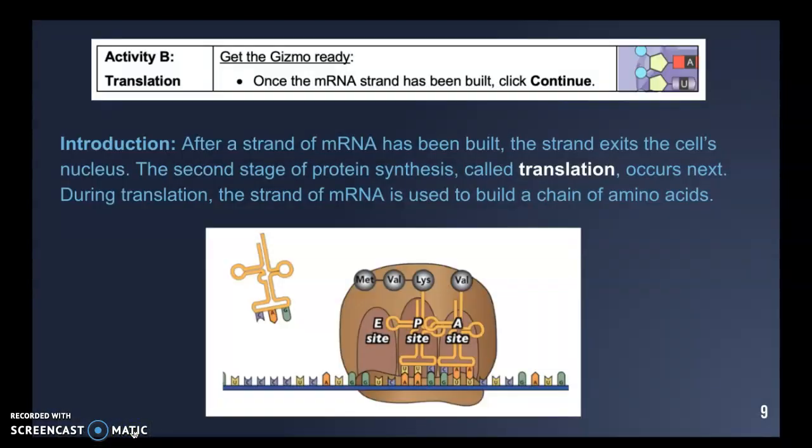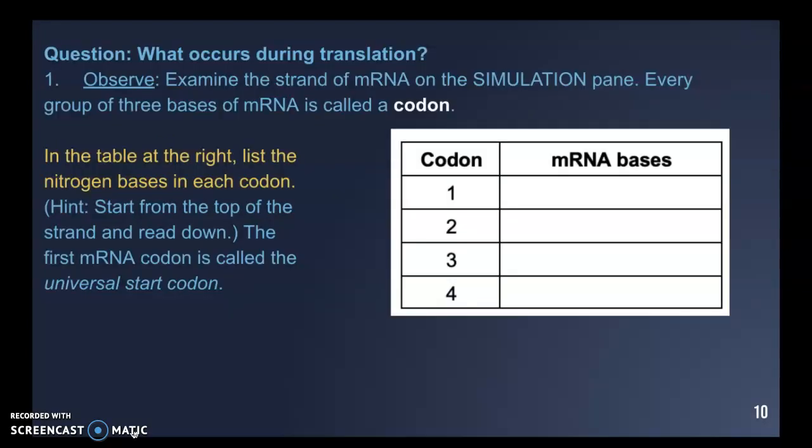Part B of the activity covers the second part of protein synthesis: translation. After a strand of mRNA is built — the code has been transcribed from DNA to mRNA — it can leave the nucleus through nuclear pores and get out into the cytoplasm. The second stage of protein synthesis is called translation, during which the mRNA is used to build a chain of amino acids.